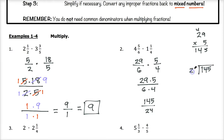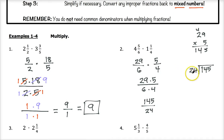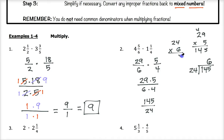So we have the improper fraction 145 over 24 that we now need to make a mixed number by dividing. 145 divided by 24: 24 won't go into 14 so we take it into 145. Using estimating skills, 24 goes into 145 six times, and 24 times six is 144, with a remainder of one. So this becomes the mixed number six and one twenty-fourth.